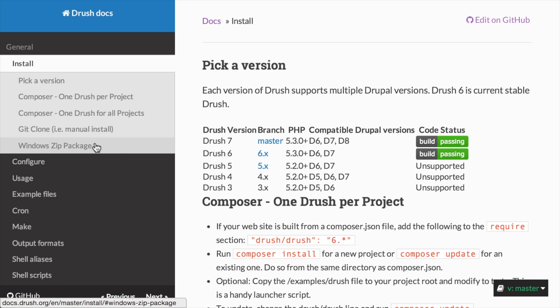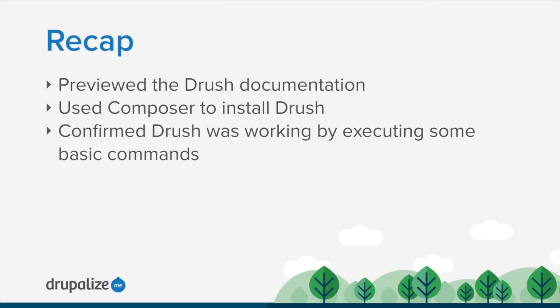For a quick recap: in this tutorial we took a look at the documentation on docs.drush.org — specifically the installation documentation — then used the Composer command-line tool to install Drush and switch between different versions. We confirmed that Drush was working by executing basic commands, checking which version we had installed, getting a list of Drush help output, and installing a different version of Drush. I hope this helps you get Drush installed on your local host and making use of it in your day-to-day development work.